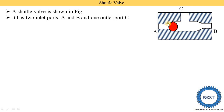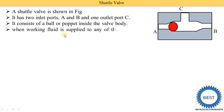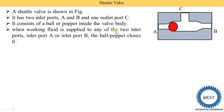Inside the valve body, there is a ball or poppet — here you can see it is the red-colored ball. So the shuttle valve consists of a ball or poppet inside the valve body. In some types of valves, instead of a ball they use a poppet.